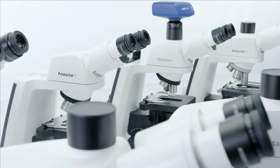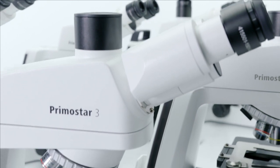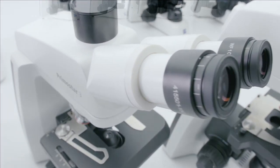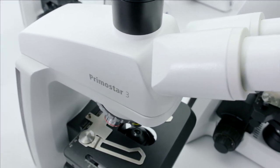With the Zeiss PrimoStar 3, you're free to work either with a 30-watt halogen bulb or with energy-saving LED illumination offering stable color temperature and illumination intensity.